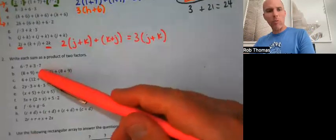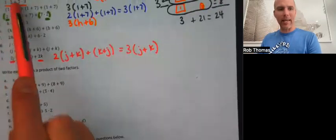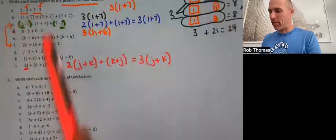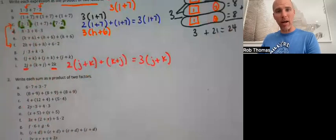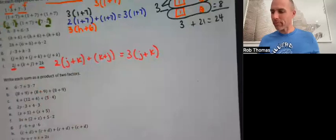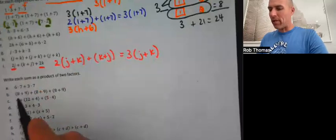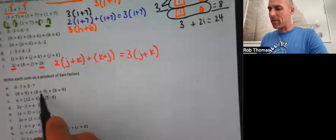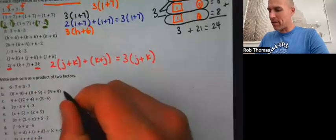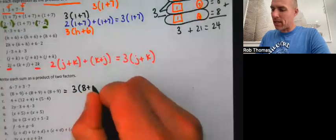This section is more of the same. Problem A here is exactly like problem A before, just with different numbers — 6, 7, 3, 7 instead of 1, 3, 7, 3, but the process is the same. For problem B, group eight plus nine plus eight plus nine plus eight plus nine — that's three (8 plus 9), giving 3 times (8+9).